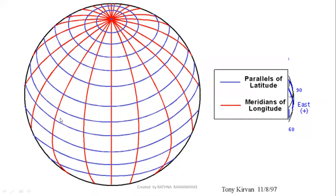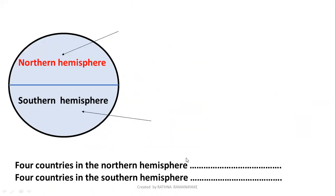Here in blue color you can see latitudes. In red color you see longitudes.